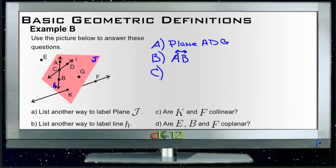For question C, it asks: are K and F collinear? Collinear means they're on the same line. So the question is, are points K and F on the same line? And we can tell by the picture — yes, they are.